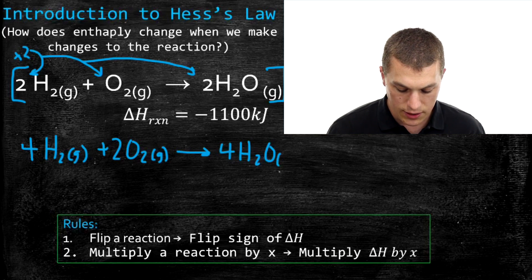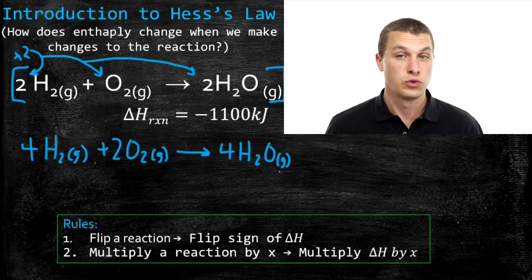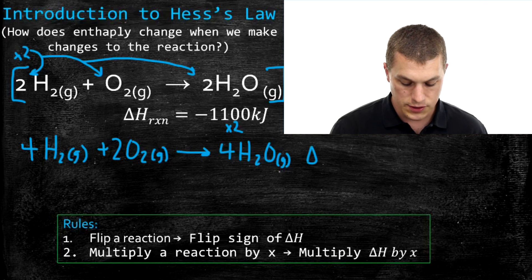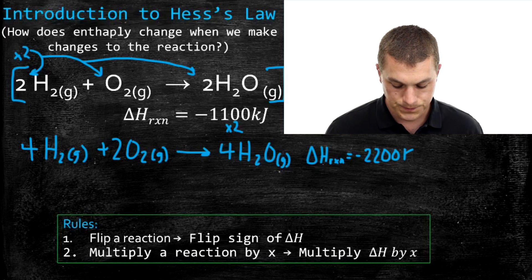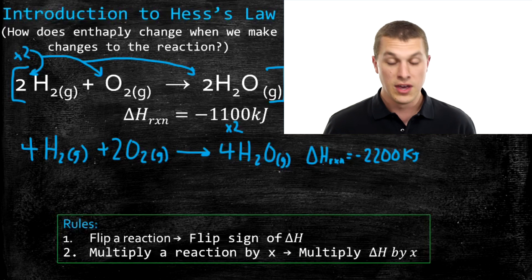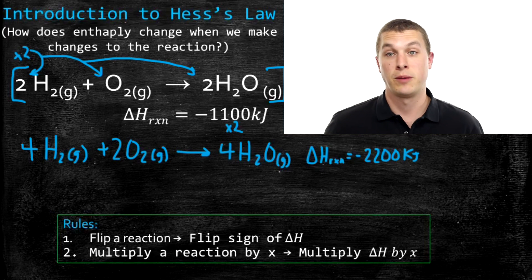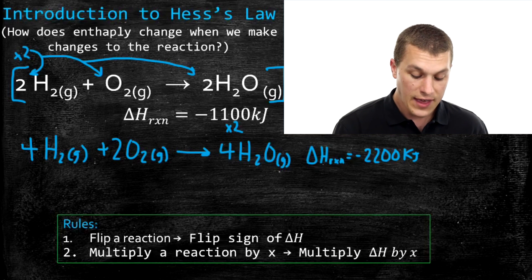We've taken a reaction that used to make two waters, and now we're doing that same reaction to make four waters. If making two waters gave off 1100 kilojoules, making four waters is going to give off 2200 kilojoules. Since we multiplied the reaction by two, we multiply our enthalpy of reaction by two, giving us a new delta H of negative 2200 kilojoules. You can multiply a reaction by any number — two, three, four, five — and you can also multiply it by fractions like one half.